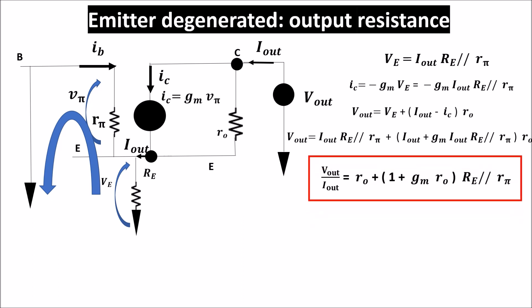Here we add a term to little r_o, and this term is the intrinsic gain of the BJT times the parallel between R_E and r_pi. As you can see, if we put R_E to zero, the output resistance becomes simply little r_o.